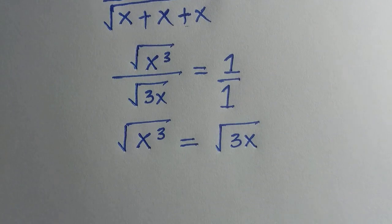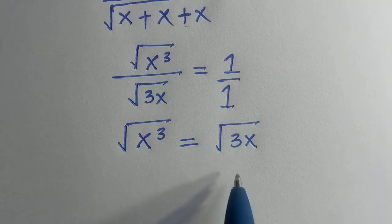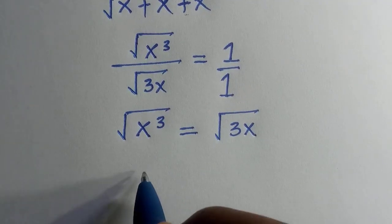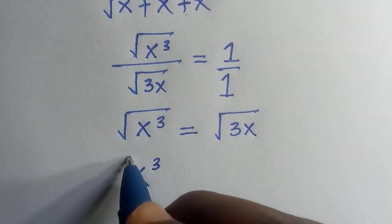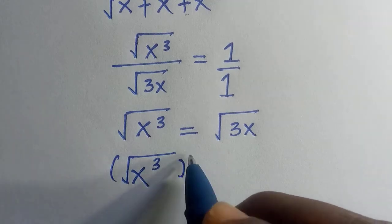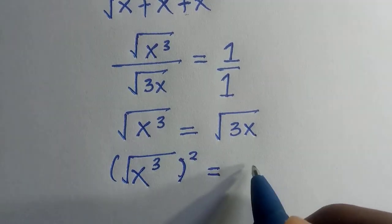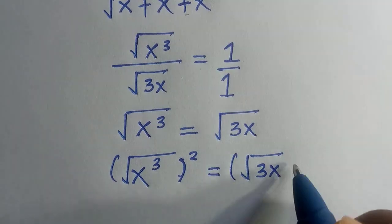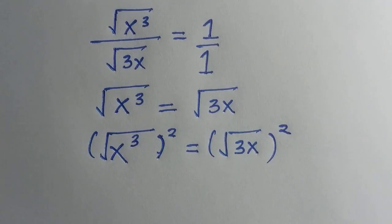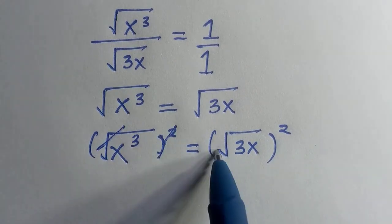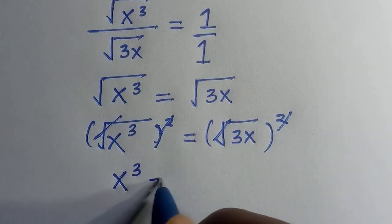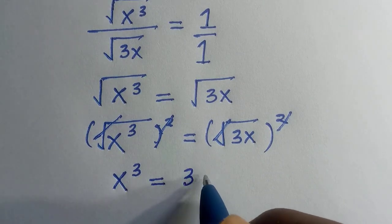On getting to this stage, what we'll do is take the square of both sides, just to cancel the square root. We have x to the power of 3 raised to the power of 2, equals the square root of 3x all raised to the power of 2. The square roots cancel on both sides. Therefore, we have x to the power of 3 equals 3x.